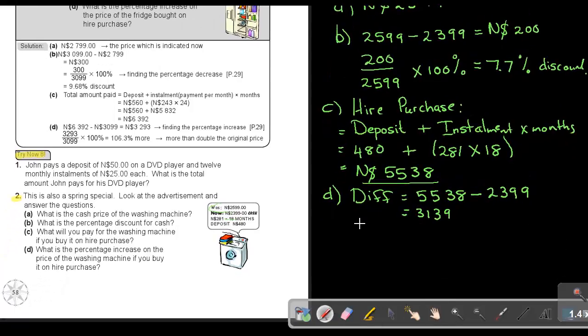To make it a percentage, divide $3,139 by the original $2,599 and multiply by 100%, giving 120.8%.